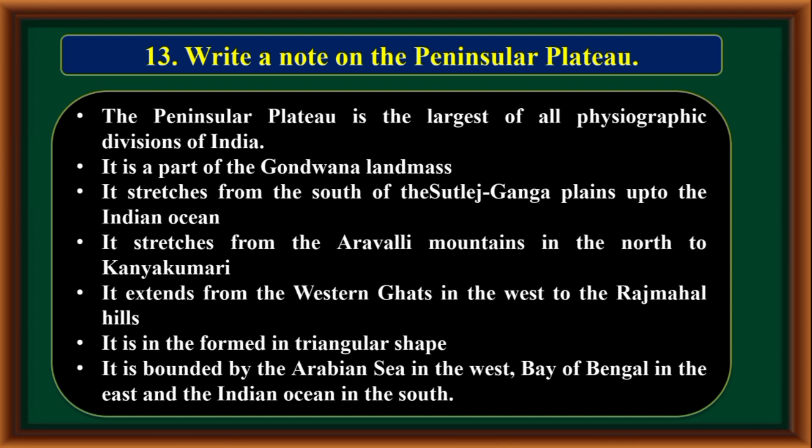The peninsular plateau extends from the Western Ghats in the west to the Rajmahal Hills, and is formed in a triangular shape. It is bounded by the Arabian Sea in the west, the Bay of Bengal in the east, and the Indian Ocean in the south.